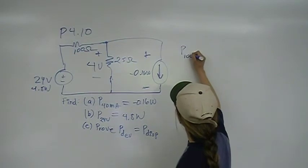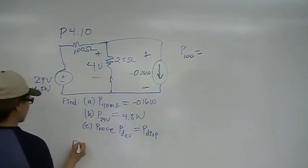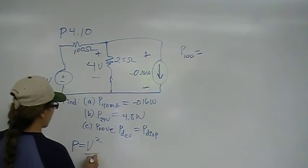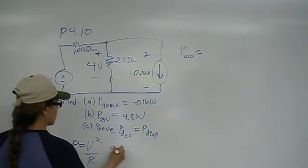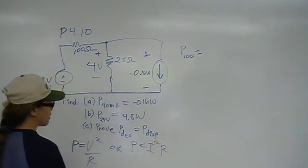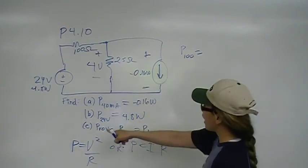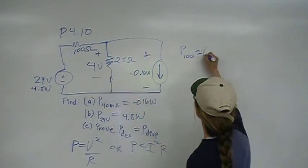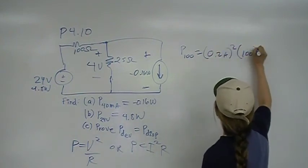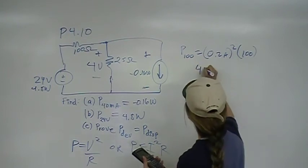P sub 100 then is going to be, well, P is either, we have two choices, right? P is computing power across resistors. P is equal to V squared over R or P is equal to I squared R. And we use whatever we have the information for. So, here we have I, which we computed previously to be 0.2 amps. I squared R is 100. When you put that 0.2 squared times 100, it should come up with 4 watts.